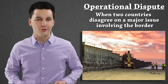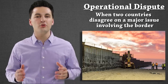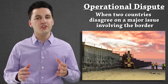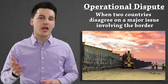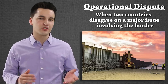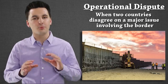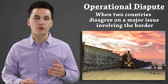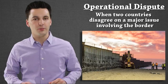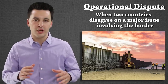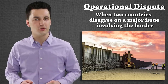Our next boundary dispute is an operational boundary dispute. These happen when two countries next to each other disagree on a major issue involving the border. For example, the United States and Mexico both agree where the border is, but they can't agree on how best to handle border crossings. The boundary itself is not in dispute — it's the control and operation of the boundary that is being contested.